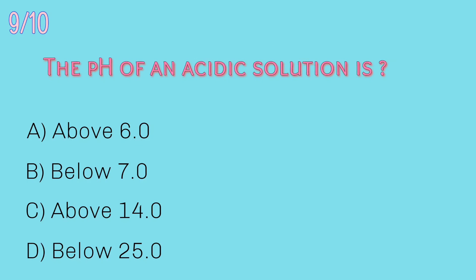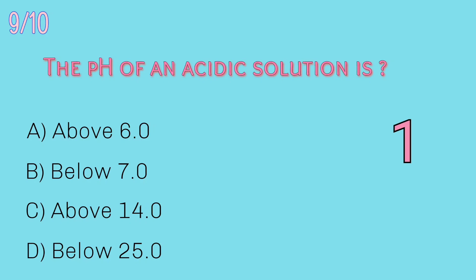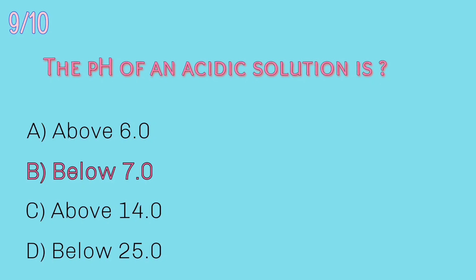Ninth question: the pH of an acidic solution is — above 6.0, below 7.0, above 14.0, or below 25.0? Answer: Below 7.0. A pH below 7.0 is acidic, and anything above 7.0 is basic.